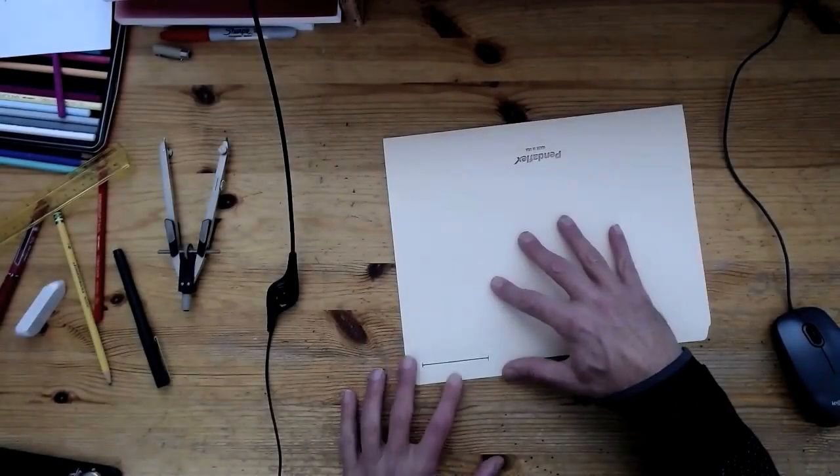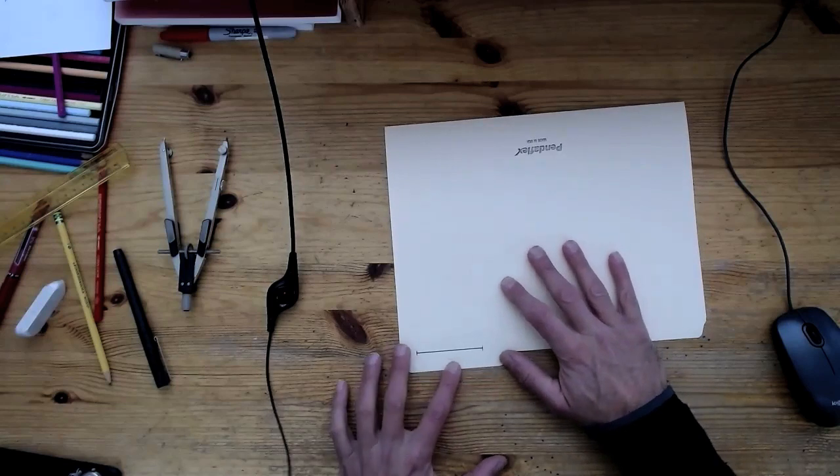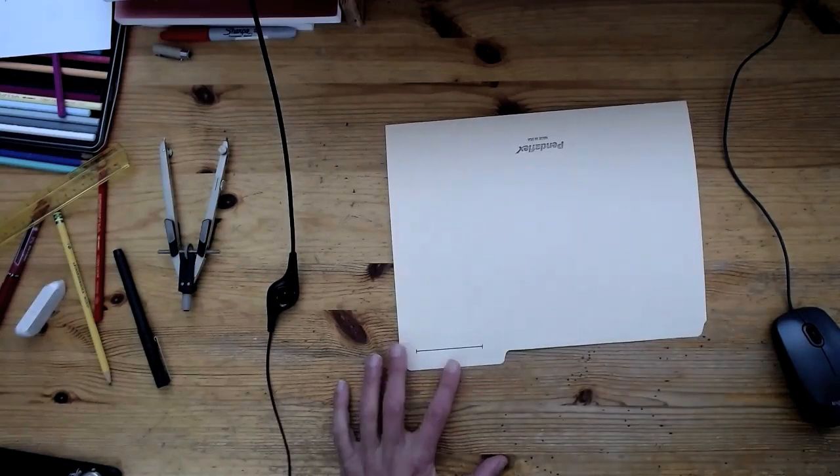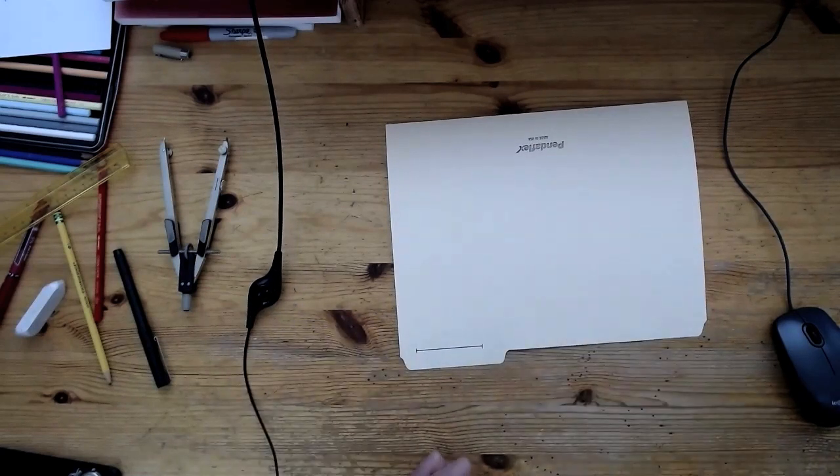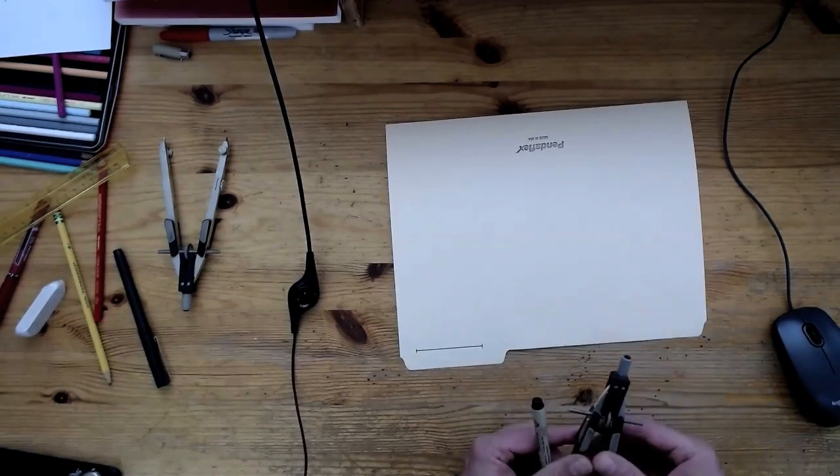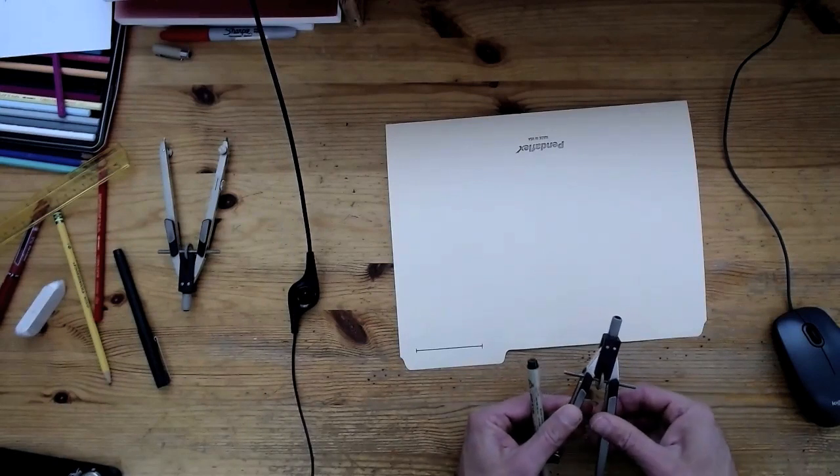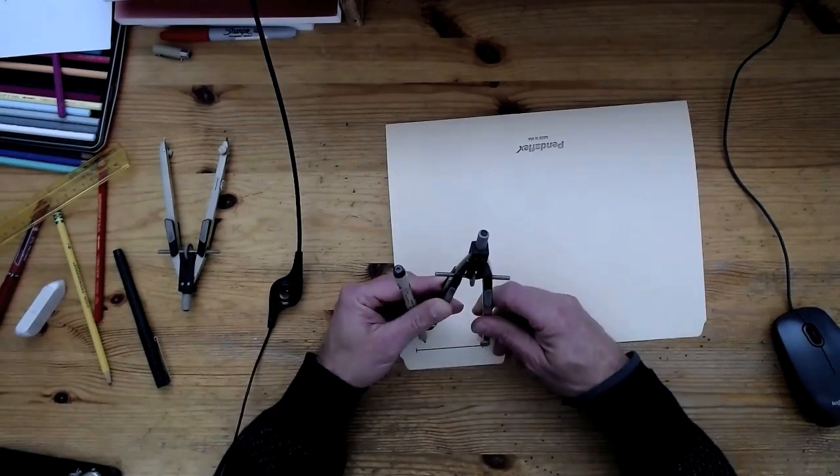An octahedron is certainly going to be comprised of eight of these triangles. Each triangle needs to be equilateral. I just started here with a line that's going to be the length of the edge that I need. I'd probably recommend three and a half inch long edges. This is a little bit smaller for my purposes here.